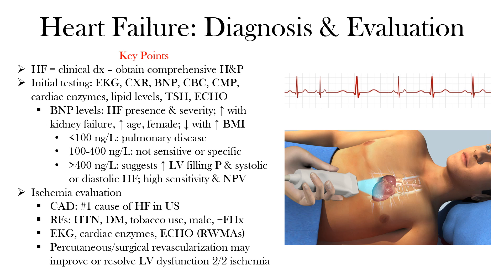Fluid or volume overload is associated with crackles on pulmonary auscultation, jugular venous distension, peripheral edema, ascites or increased abdominal girth, dyspnea, orthopnea, and paroxysmal nocturnal dyspnea — all of which we discussed in the previous lecture.